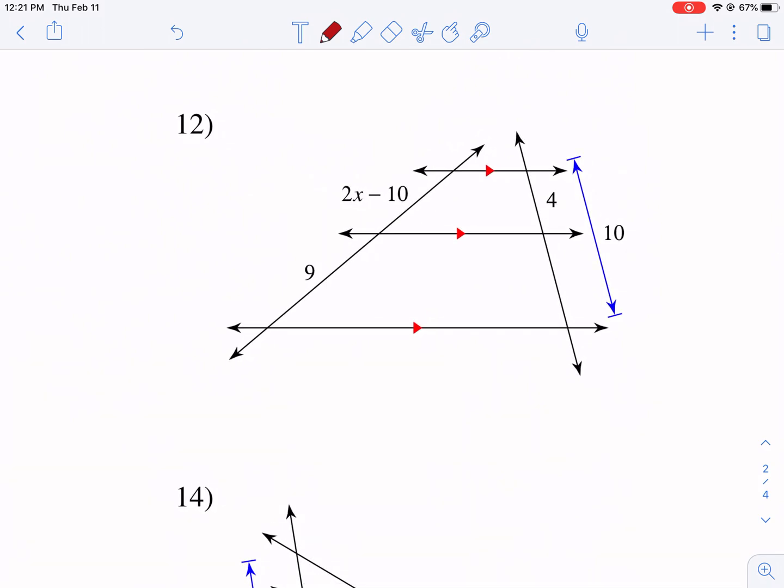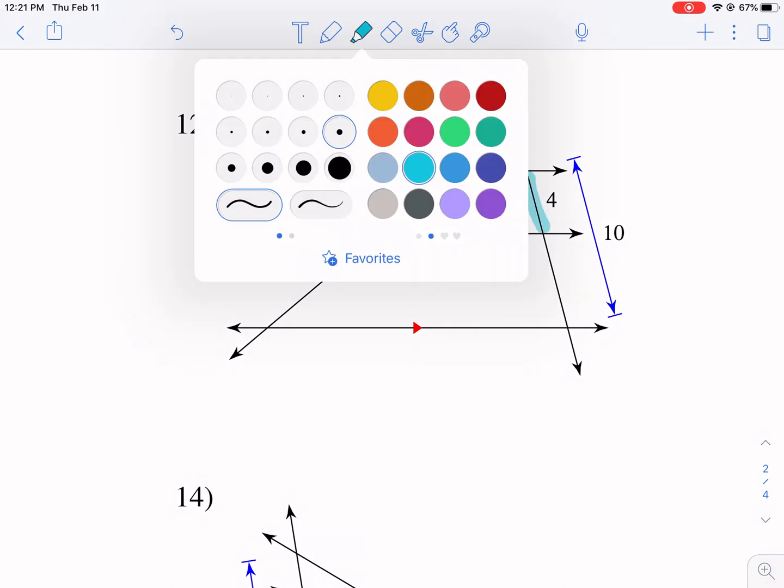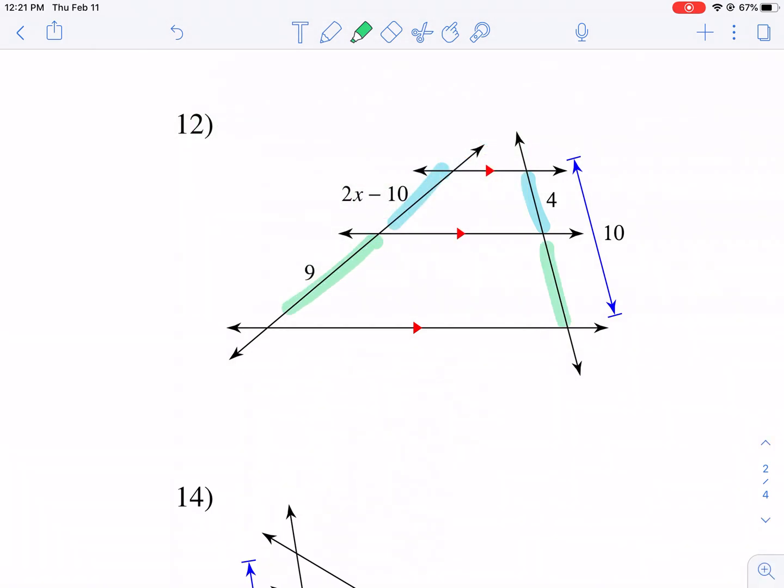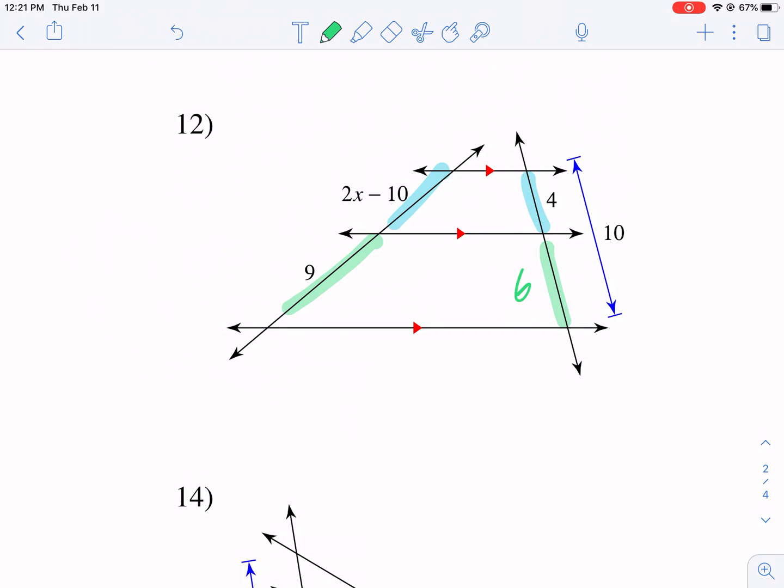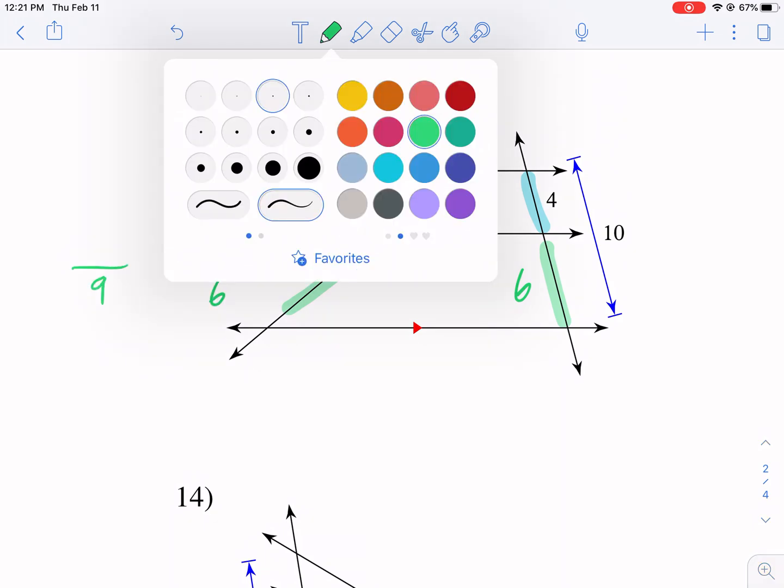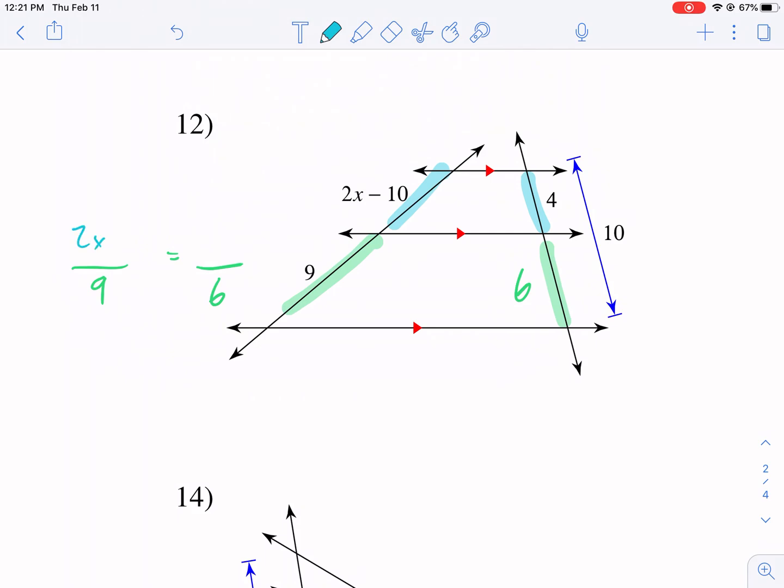So with number 12, we have 2x minus 10. So we can go ahead and set this up like we did before. We have these two segments, and then we can do 10 minus 4 to find that bottom segment, which is 6. So now we're ready to set up a proportion. We can put 9 and 6 on the bottom, and then we can put 2x plus 10 on the top here, or 2x minus 10, and then 4 on the top here.